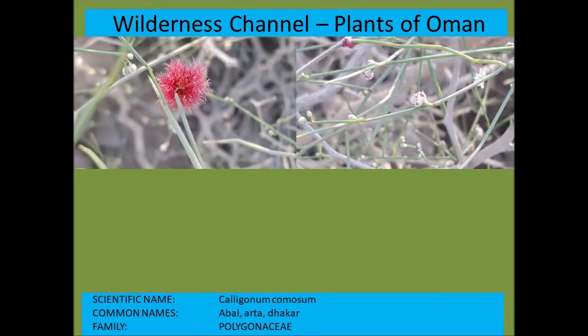Calligonum comosum has these red fluffy fruits which are edible — from the Polygonaceae, the polygonum family.